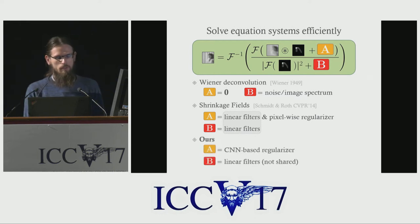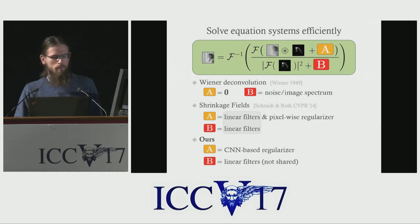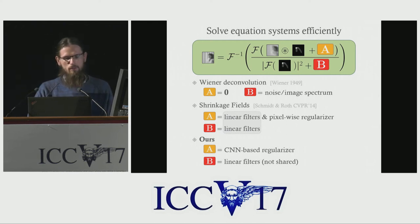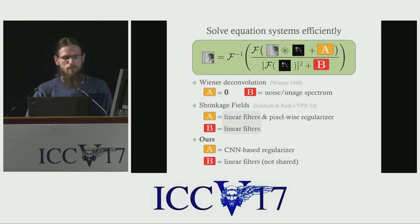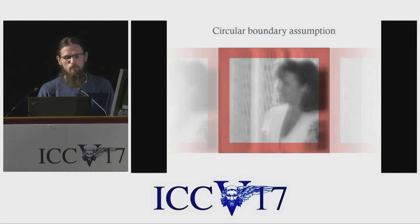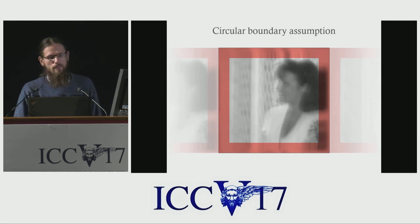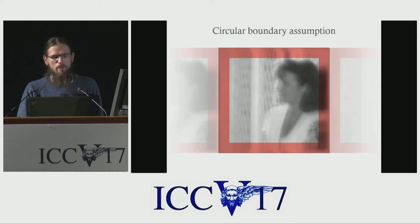We improve on this in two major ways. Our first contribution is to replace the pixel-wise applied shrinkage functions with more expressive convolutional neural networks, which also decouples A and B. Secondly, we propose a new boundary adjustment strategy to cope with the circular boundary assumption that underlies all Fourier-based deconvolution methods.